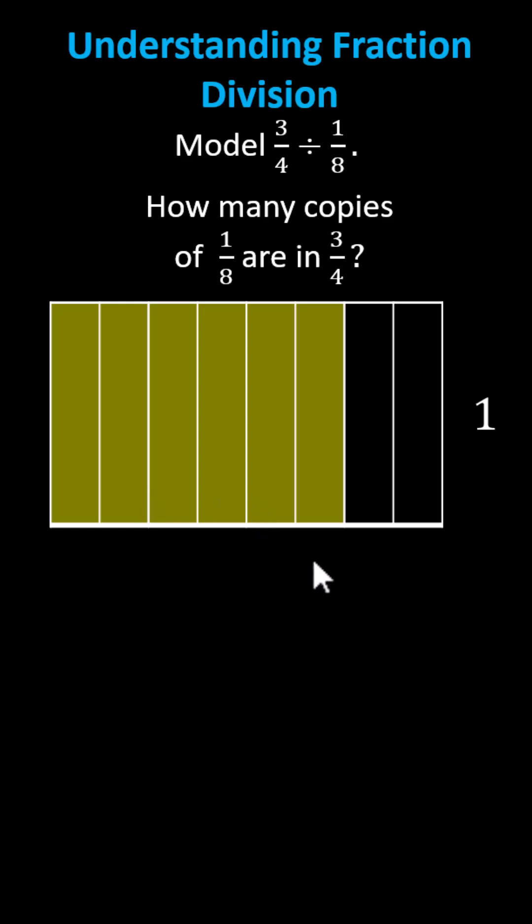Now we can count the number of copies of 1 eighth in 3 fourths. Remember 3 fourths is the shaded region. We have 1, 2, 3, 4, 5, 6 copies of 1 eighth in 3 fourths, which is why 3 fourths divided by 1 eighth is equal to 6.